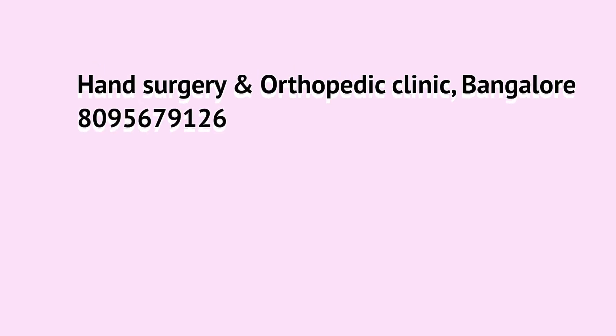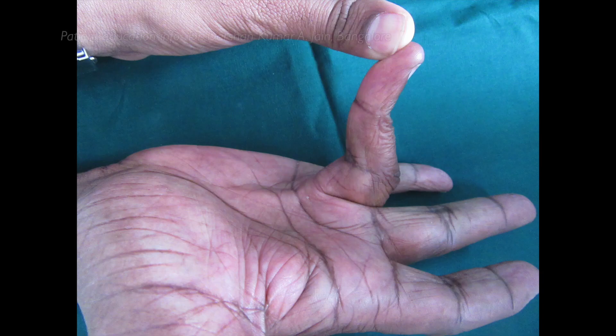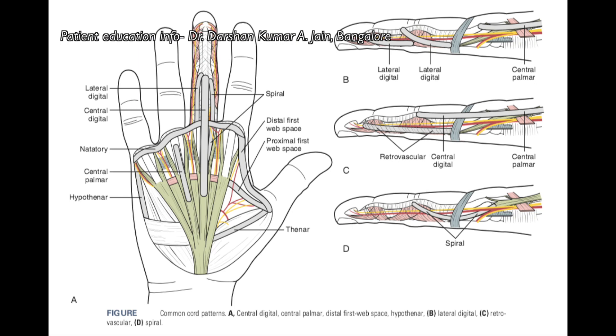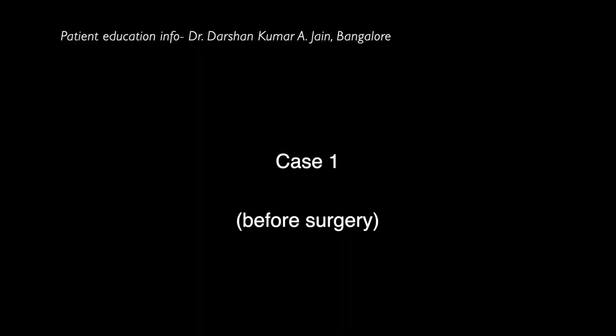Dupuytren's disease is a condition wherein the patient is unable to straighten the fingers and his fingers go on progressively bending. This is mainly due to an abnormal tissue which grows inside the hand. In early stages it can be managed conservatively by stretching, but as it progresses it can be disabling and limiting a lot of activities, which needs surgical removal.